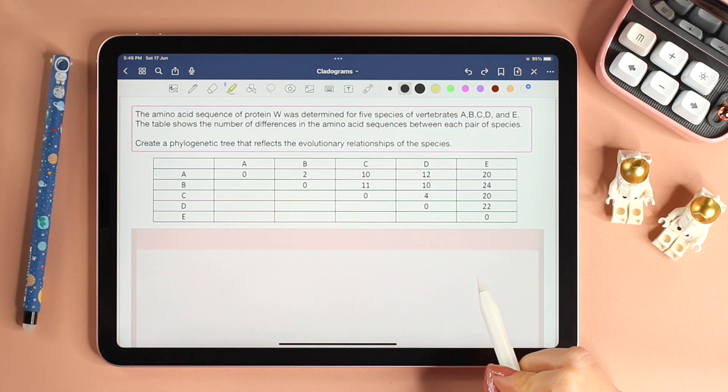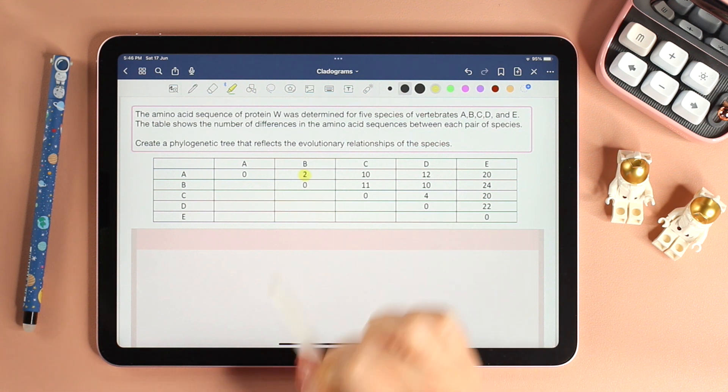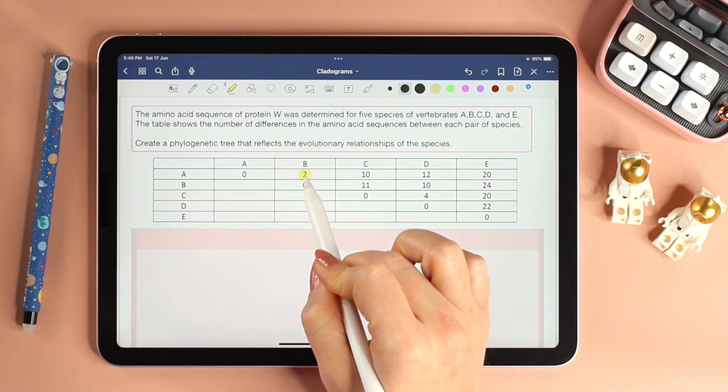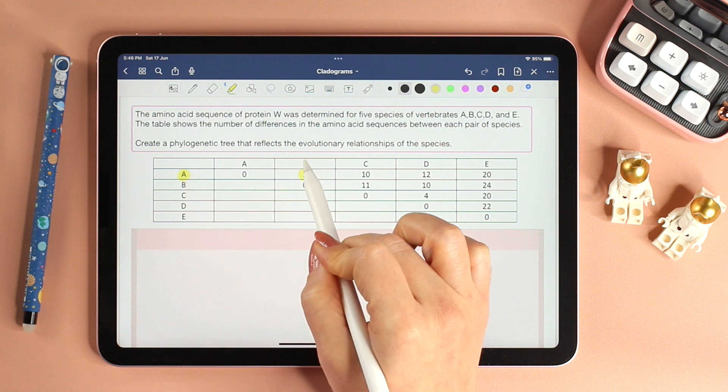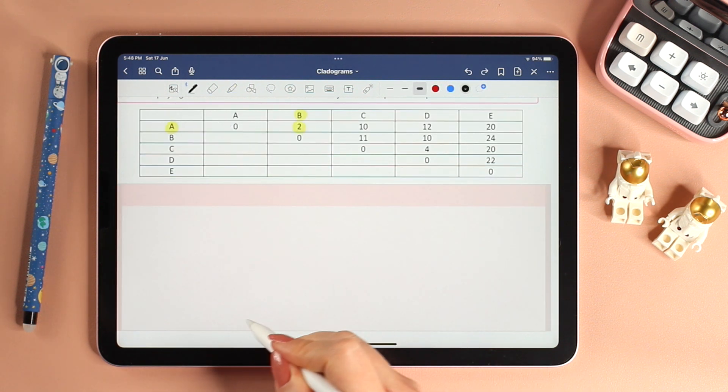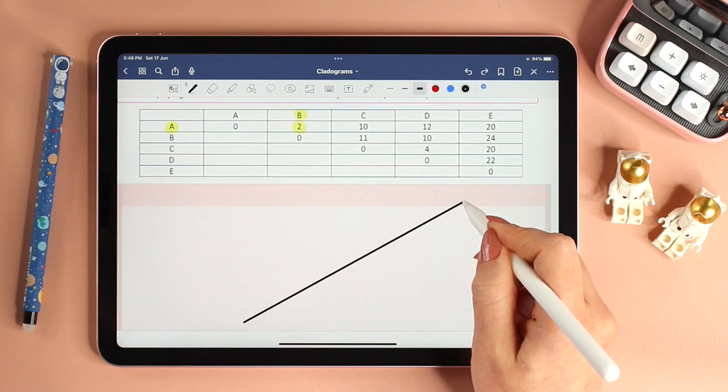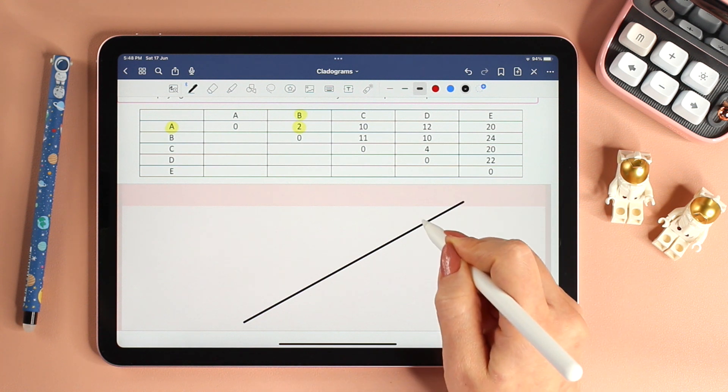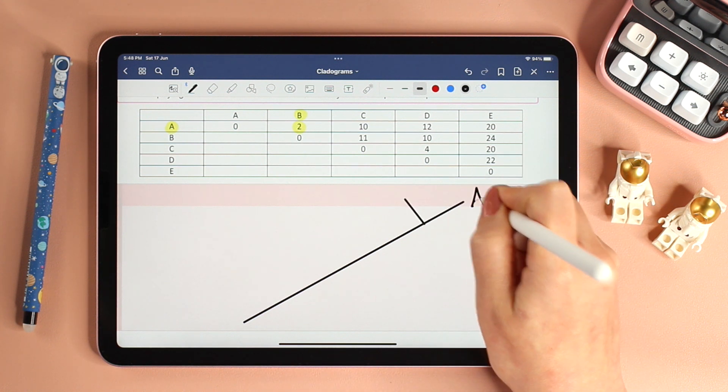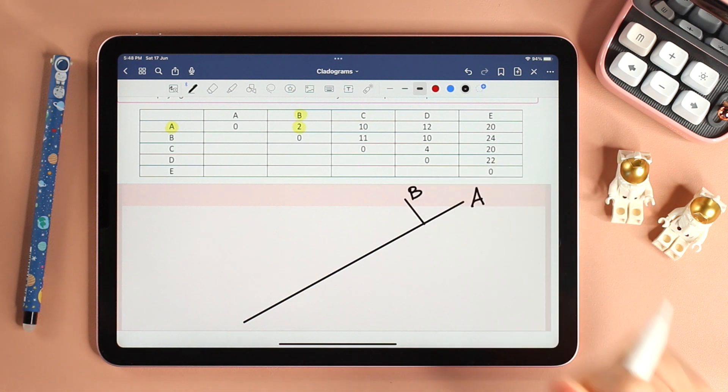Let's circle the smallest number. In this case, it is 2. Two is the smallest difference between A and B. Go ahead and draw a line, and on top of the line, place A and B together.